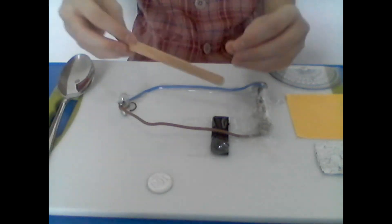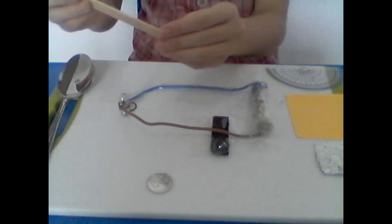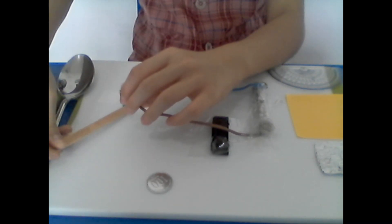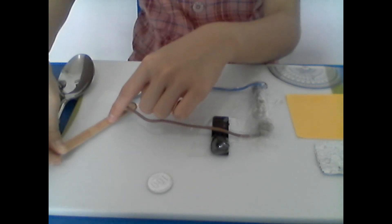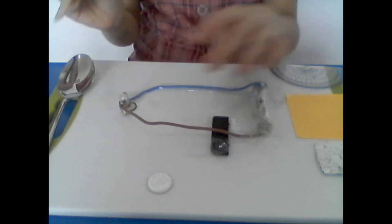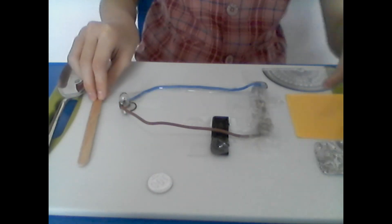Let's try this stick from wood now. The light bulb doesn't light up. That means the wooden stick is not an electric conductor.